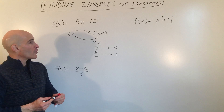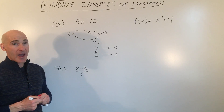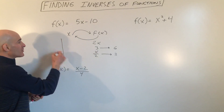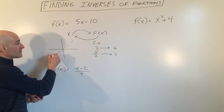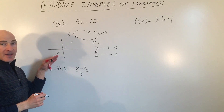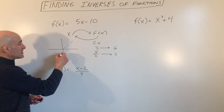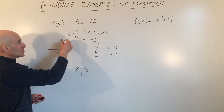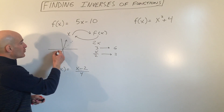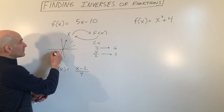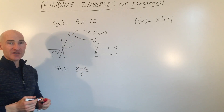So when you take a look at inverse functions and their graphs, what you'll notice is that the graphs are reflections over the line y equals x, this 45 degree line. For example, if you were graphing y equals 2x, that would have a slope of 2. If you're graphing y equals 1 half x, that would have a slope of 1 half. And you can see these graphs are reflections over that line y equals x.